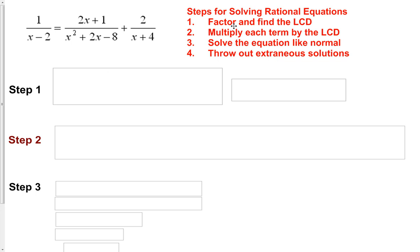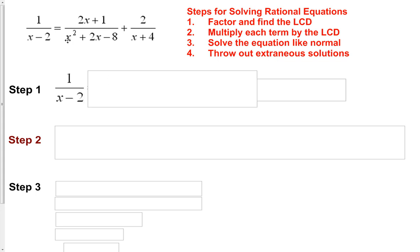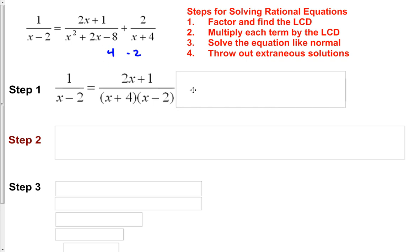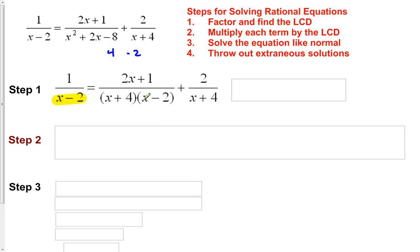Last example, same four steps. Factoring the denominators: 1 over x minus 2 doesn't factor, so leave it as is. We have x squared plus 2x minus 8 — two numbers that multiply to negative 8 and add to positive 2 are positive 4 and negative 2. So that factors into x plus 4 times x minus 2. On the right side, we have x plus 4 — leave that as is. Our least common denominator is x minus 2 times x plus 4.